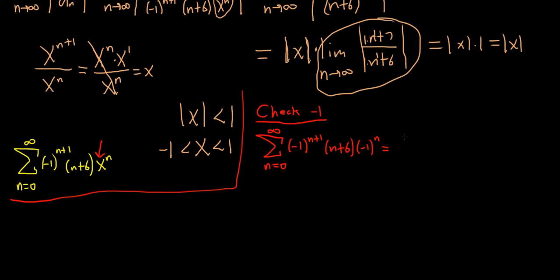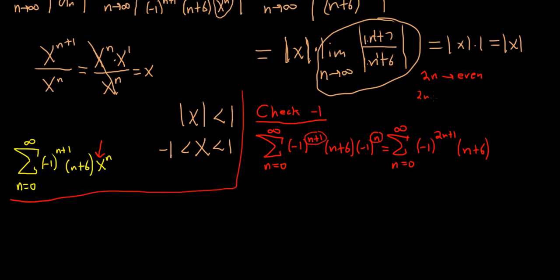We can multiply these negative 1's together. When you multiply negative 1 to the n plus 1 times negative 1 to the n, you add the exponents, getting negative 1 to the 2n plus 1. Since 2n is always even, 2n plus 1 is always odd, so negative 1 to an odd power is always negative. This gives us the infinite sum as n runs from 0 to infinity of negative 1 over n plus 6.